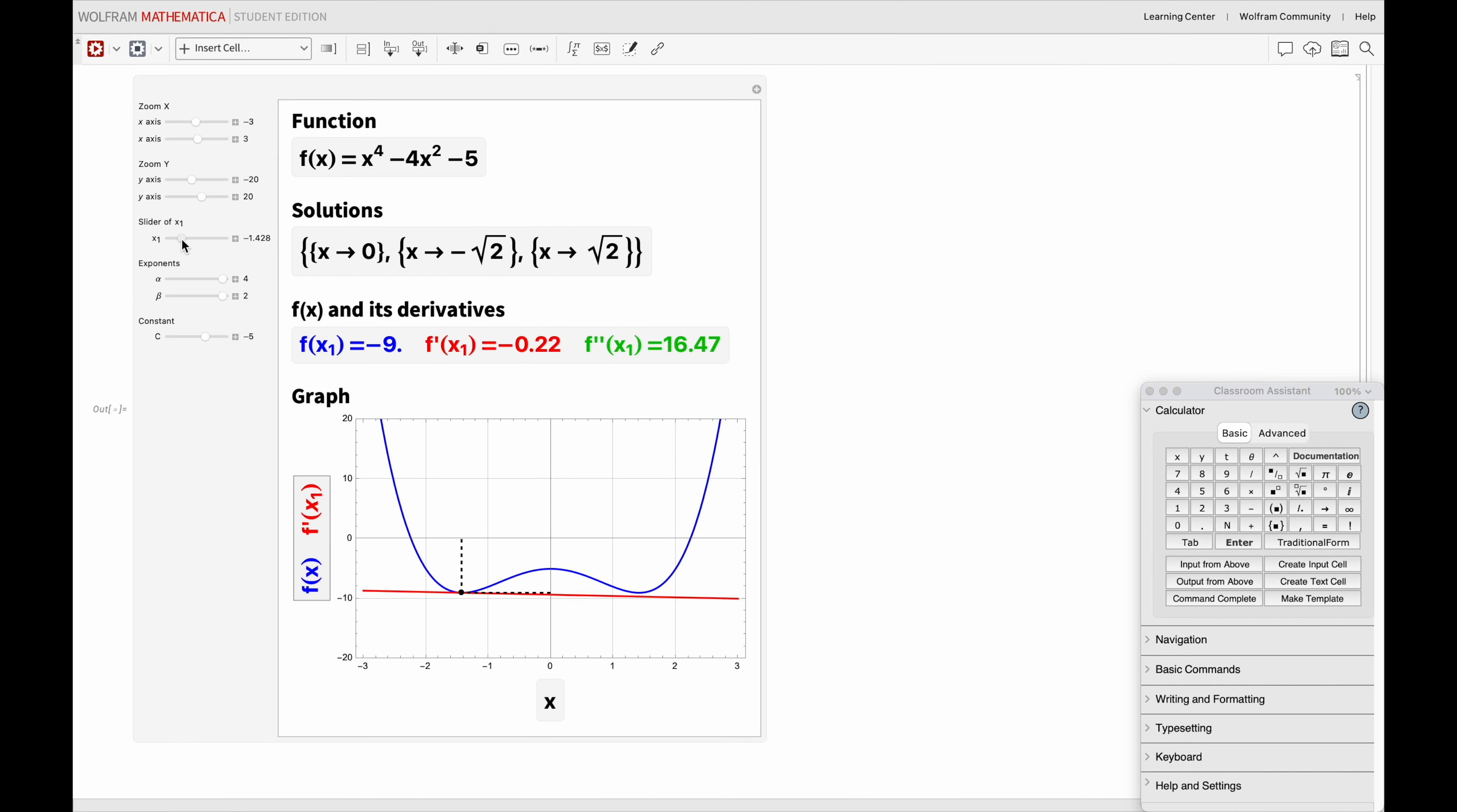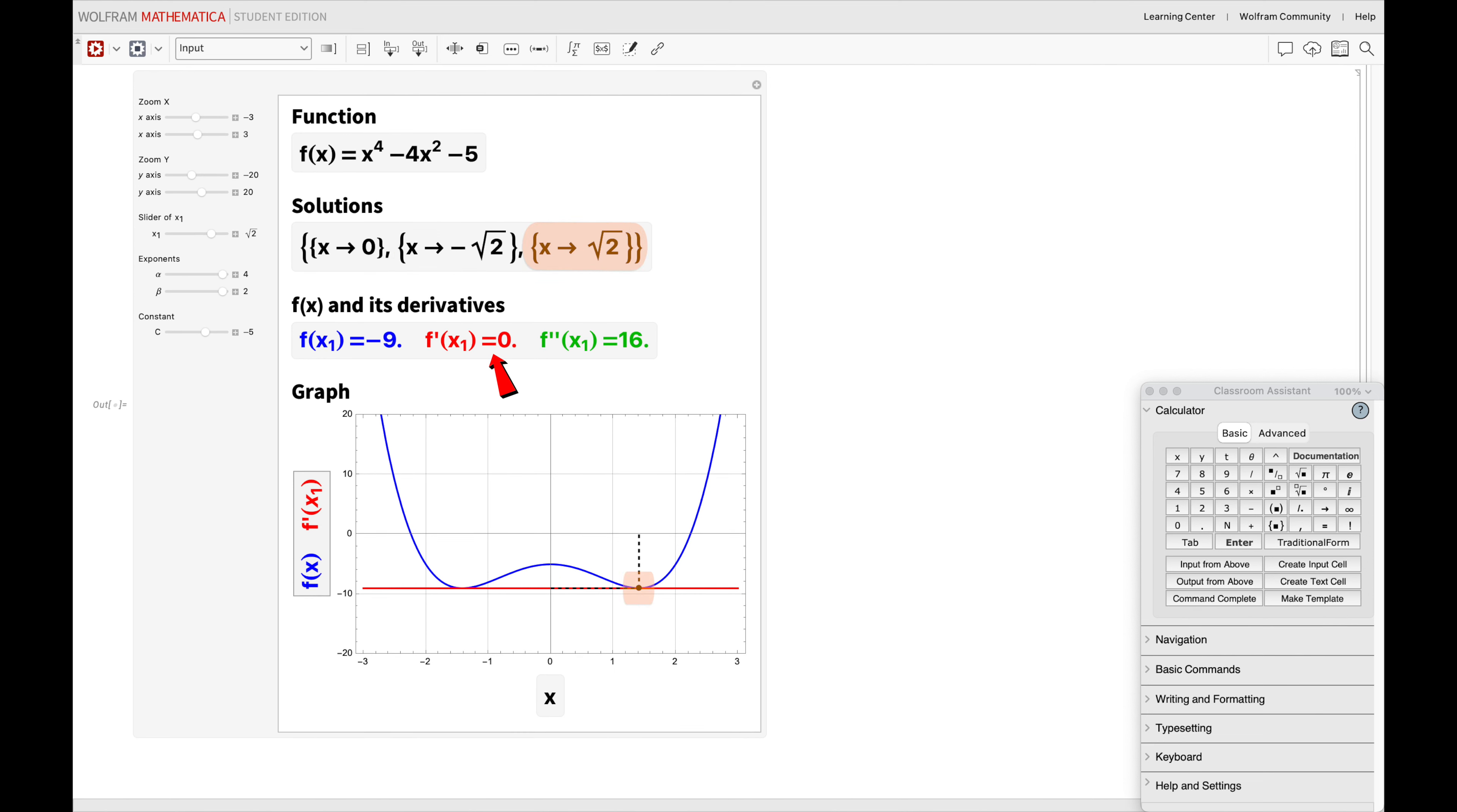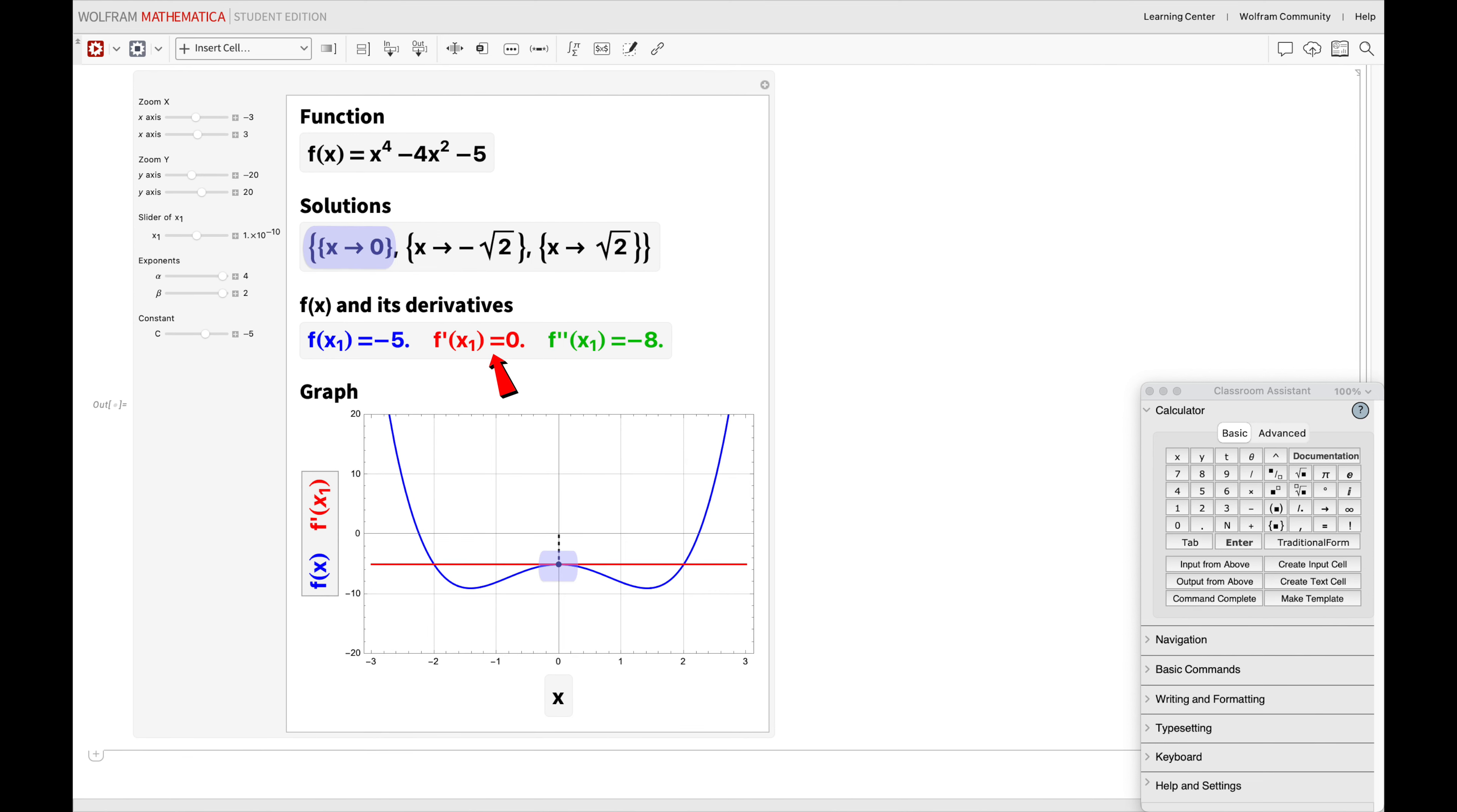As you can see, the closer that we move the slider of x towards the visible maximum and minimum points of our example function f of x, the closer the value of the function's derivative at those points will be to zero. Remember, at a maximum or a minimum point, the slope of the function is flat, that is, zero.